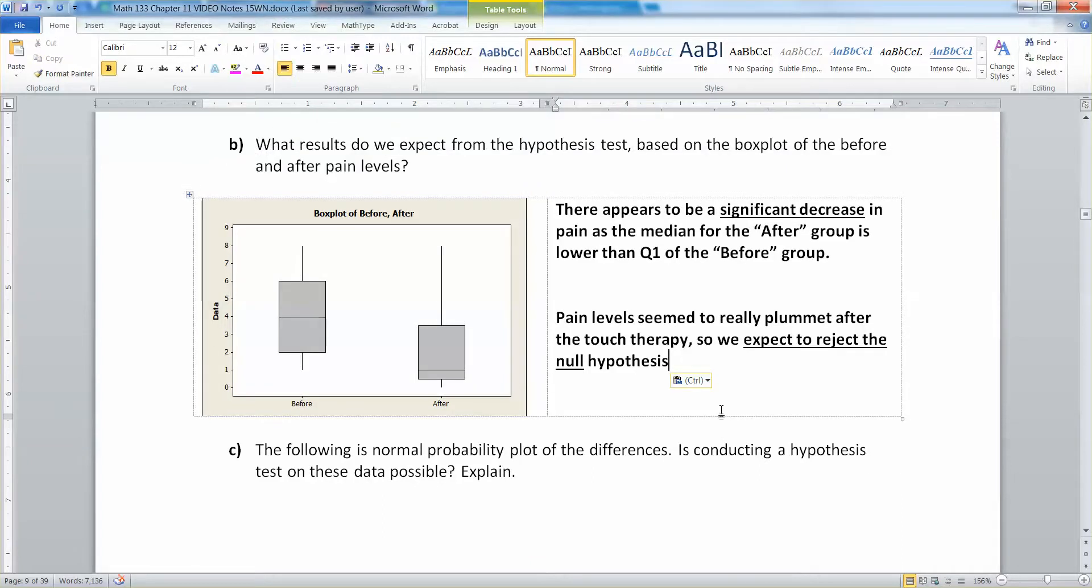There appears to be a significant decrease in pain level as the median for the after group is lower than the Q1 for the before group, actually even lower than the minimum. It looks really down there. So it seems pain levels have really plummeted after the touch therapy, so we expect to reject the null hypothesis. That's what we expect looking at the box plots. It's a good thing to remind yourself how to examine box plots - they're a lovely thing to put on final exams.